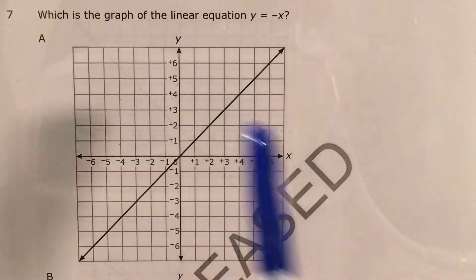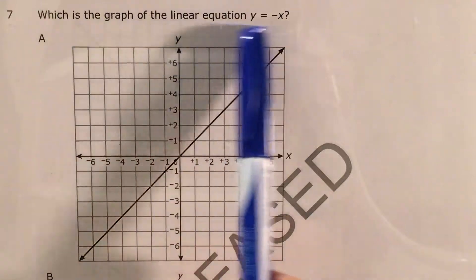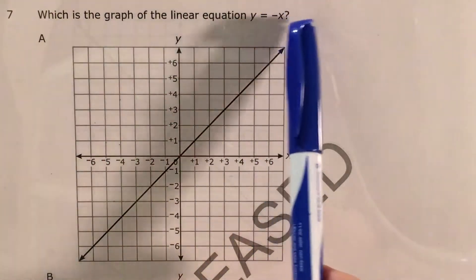We can see that we're just being asked to find which of our answers, A and then B, C, and D are offscreen, match the graph of the linear equation y equals negative x.